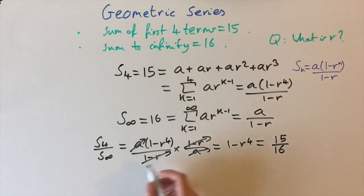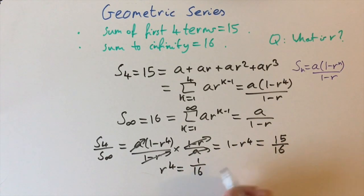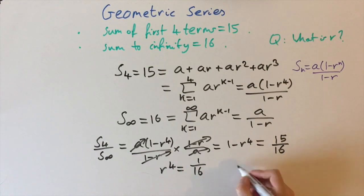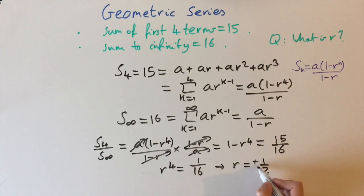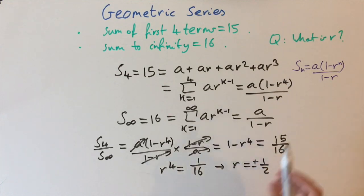Rearranging: r⁴ = 1 minus 15/16 = 1/16. Taking the fourth root: since 16 = 2⁴, we get r = 1/2. But we must consider both positive and negative solutions, because (-1/2)⁴ also equals 1/16. So both r = +1/2 and r = -1/2 are valid solutions. When r equals plus or minus one half, we get a valid geometric sequence satisfying both conditions.